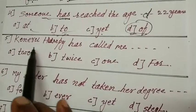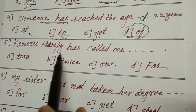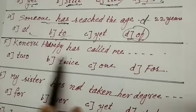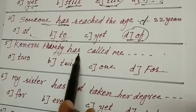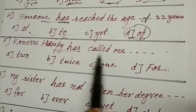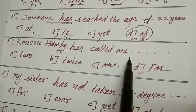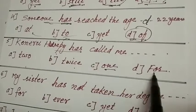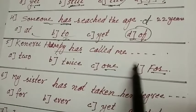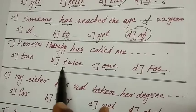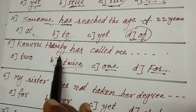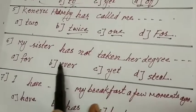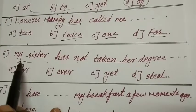Koneru Hampi has called me dash. Koneru Hampi, feminine gender. Has called me, twice or one or far. Twice. Koneru Hampi has called me twice, two times.